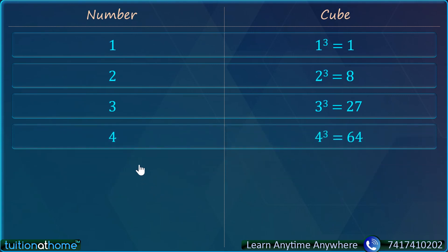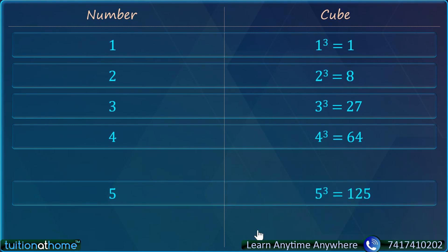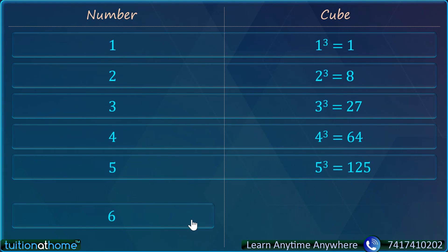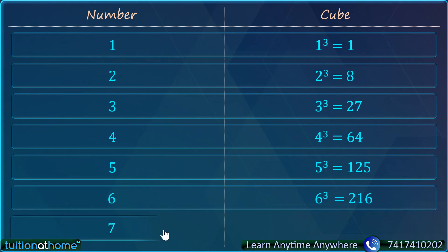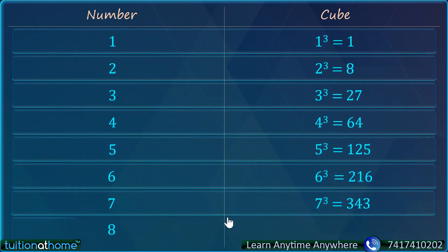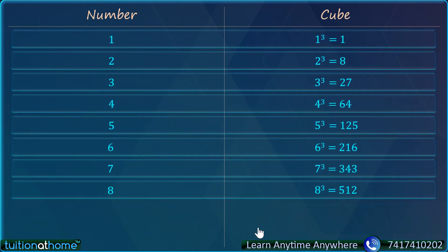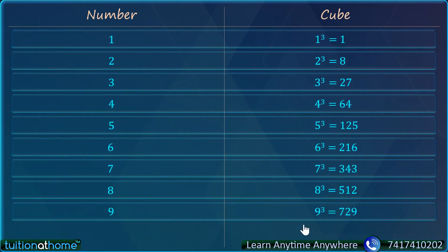Let us take 5: 5 cube is 125. Let us take 6: 6 cube means 6 sixes are 36, six 36s are 216 — so 6 cube is 216. 7 cube is 343. 8 cube is 512. 9 cube is 729. And 10 cube is pretty simple — that is 1000.